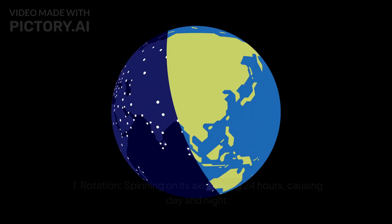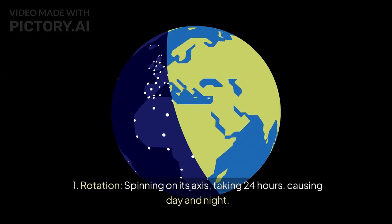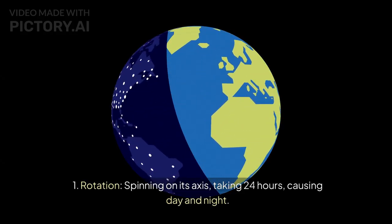Summary: Rotation - spinning on its axis, taking 24 hours, causing day and night.